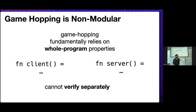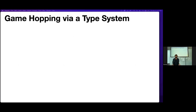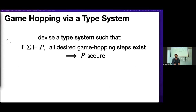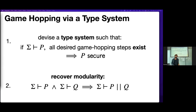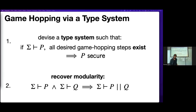Our approach is to use a type system. Here's the workflow: devise a type system such that if P is well-typed under context sigma — where sigma is the cryptographic invariant context — then every game-hopping step you desire already exists. You prove this about the type system once: if P is well-typed, then P is secure. You then recover modularity because type checking itself is modular — if P is well-typed and Q is well-typed, then P alongside Q is also well-typed. We circumvent non-modularity of game hopping by doing the game-hopping steps after all the composition.